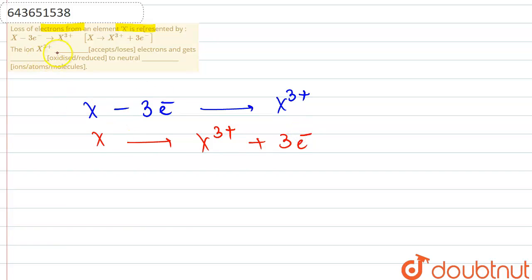Basically, oxidation is happening. The ion X3+ _____ electrons and gets _____ to neutral _____.